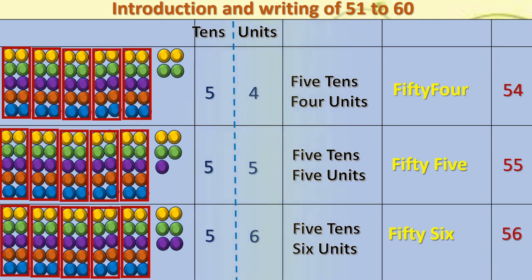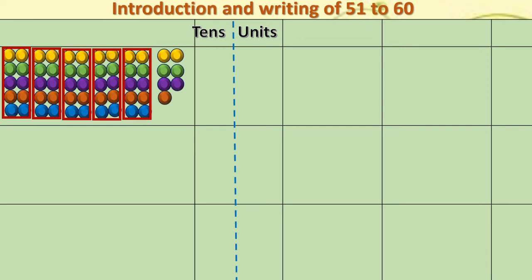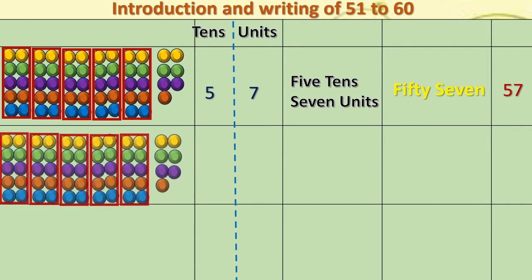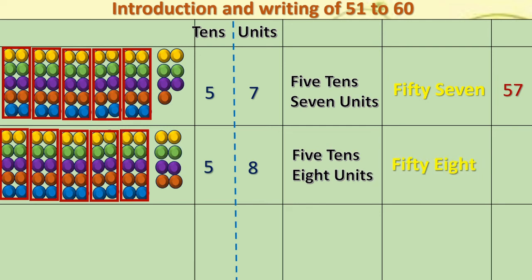We will add one more to fifty-six. This is fifty-six; one more added — brick red color. That is five tens and seven units. The number is fifty-seven — fifty and seven. We will add one more bead, brick red colored. So, we got five tens, eight units. The number is fifty-eight — fifty and eight.